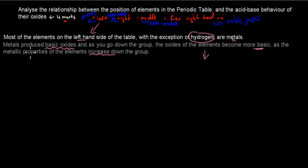For this dot point, you need to analyze the relationship between positions of elements and their behaviors — not just what kind of behavior they have, but why as well. So metals: if you go down the group, they become more basic because they increase their metallic properties. You should have said that metals produce basic oxides, and when you go down the group of metals, they produce even more basic oxides.